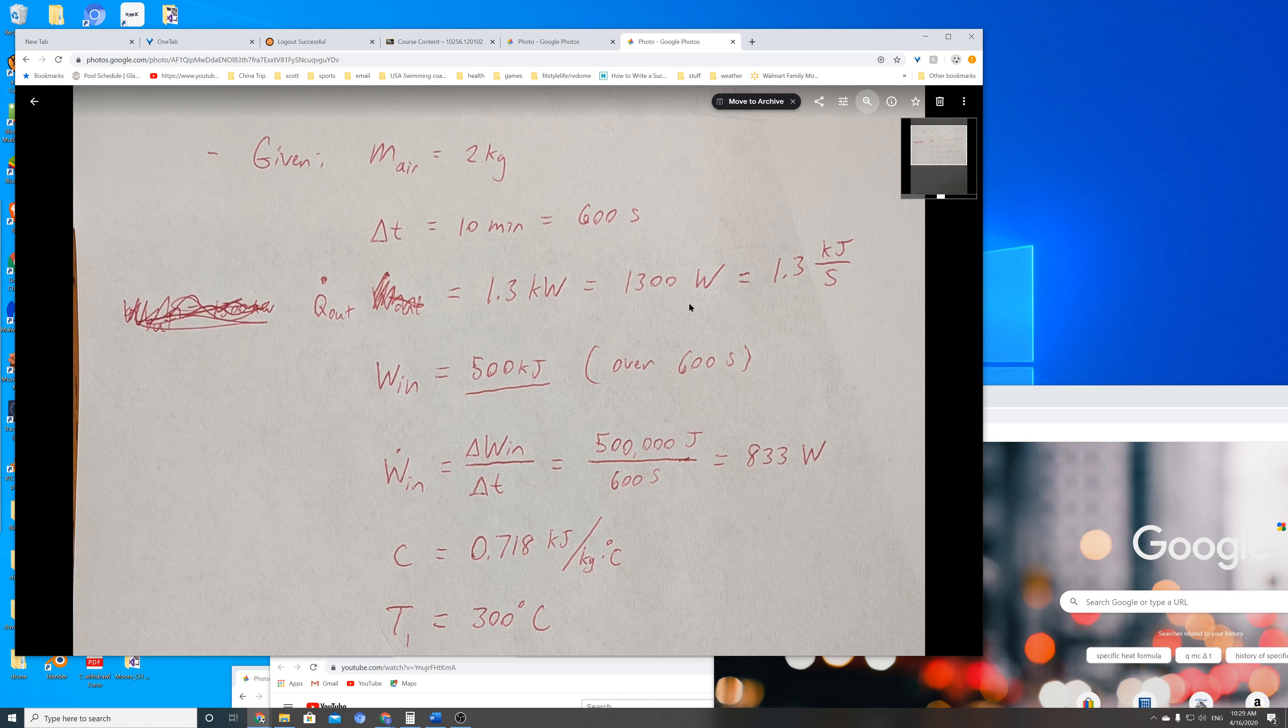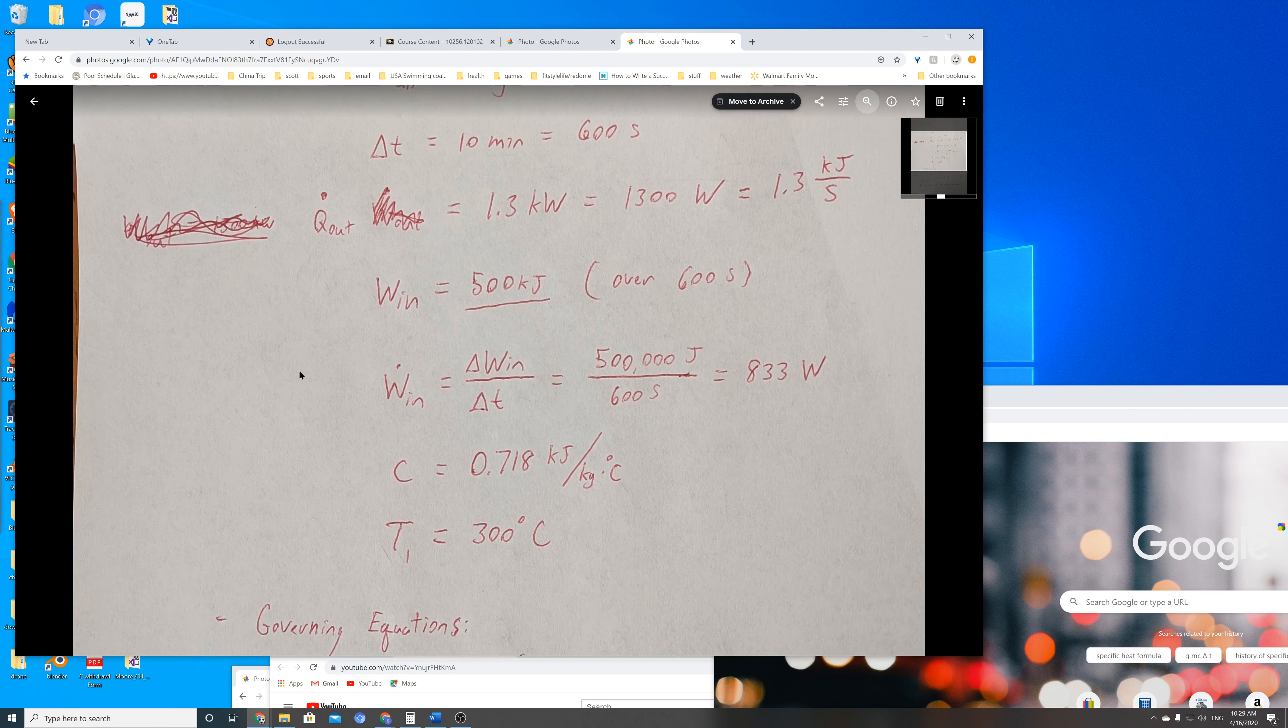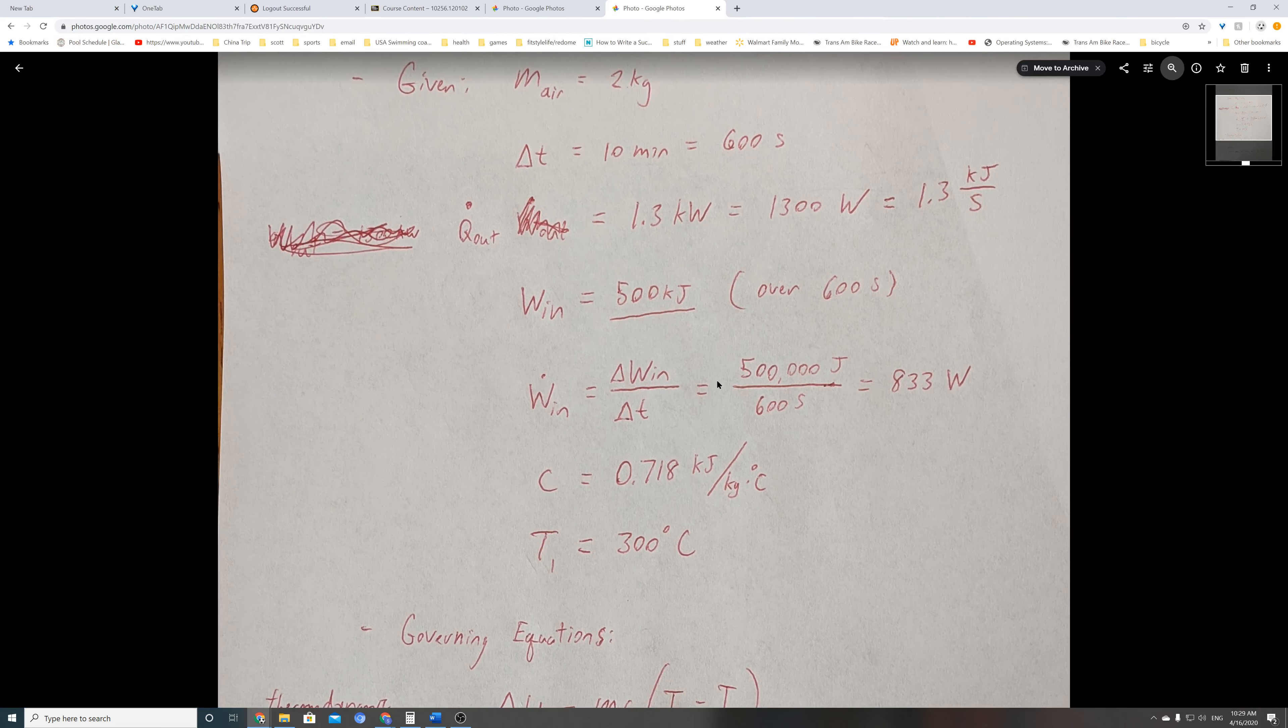I wrote it a couple different ways: 1300 watts or 1.3 kilojoules per second. The next thing is how much work is being done on the system. In this case, it was 500 kilojoules.